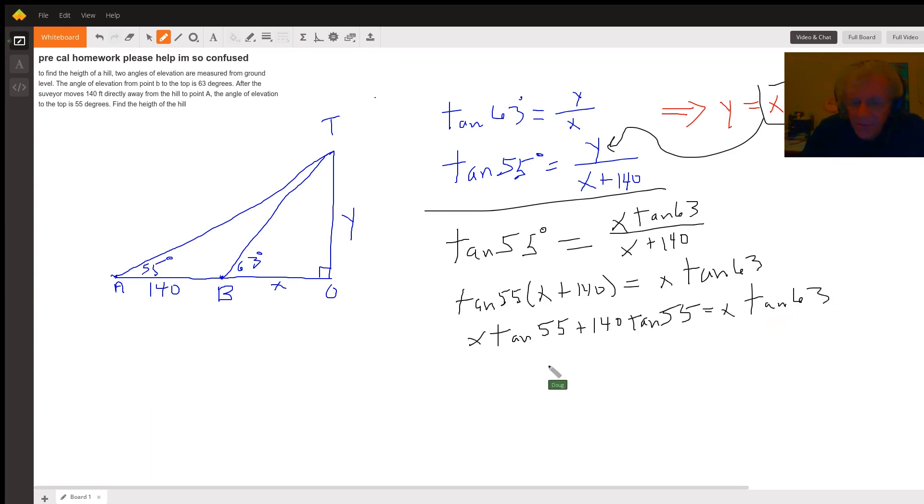Now I'd like to isolate the x, so what I'm going to do is transpose this term, or subtract x tangent of 55 from both sides. So 140 tangent of 55 equals x tangent of 63 minus x tangent of 55. Factor out an x from the left hand side—I'm sorry, the right hand side—tangent of 63 minus the tangent of 55.